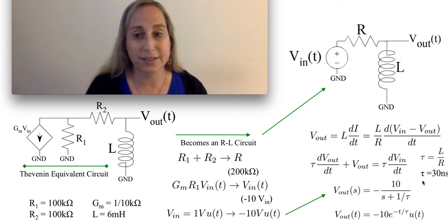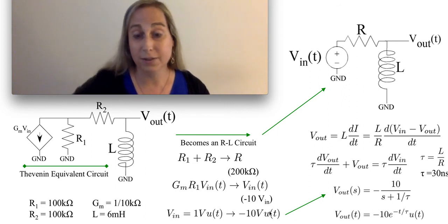Again, that's how I got the 30 nanoseconds in terms of the time constant. But the net effect is that I can then say, what happens for a step response? Well, minus 10 volt U of T. Again, U of T in terms of Laplace gives you 1 over S. Put all that together.